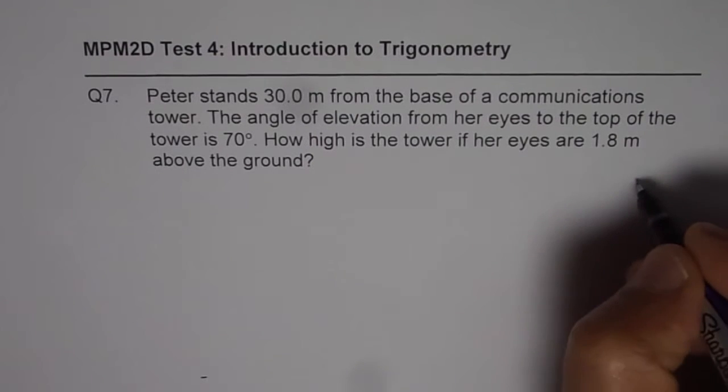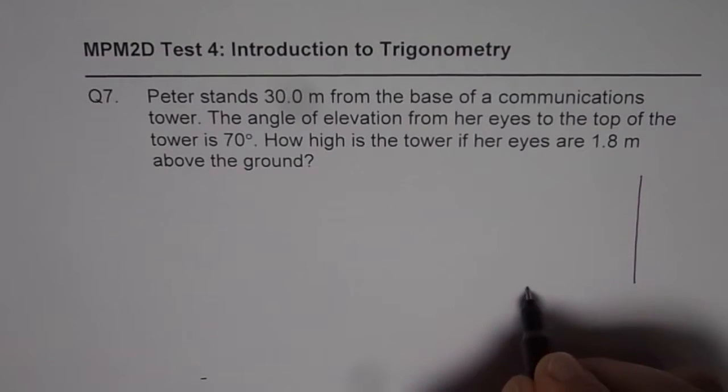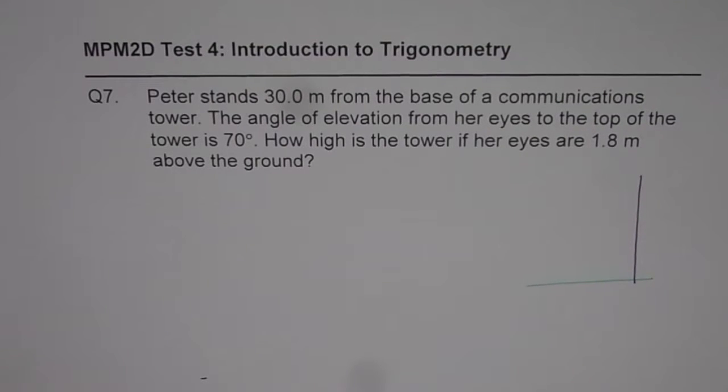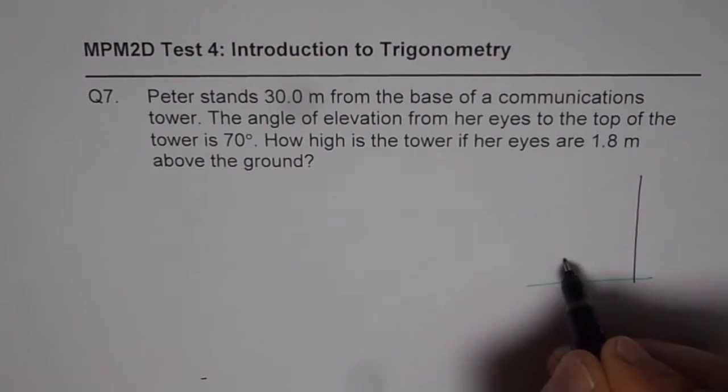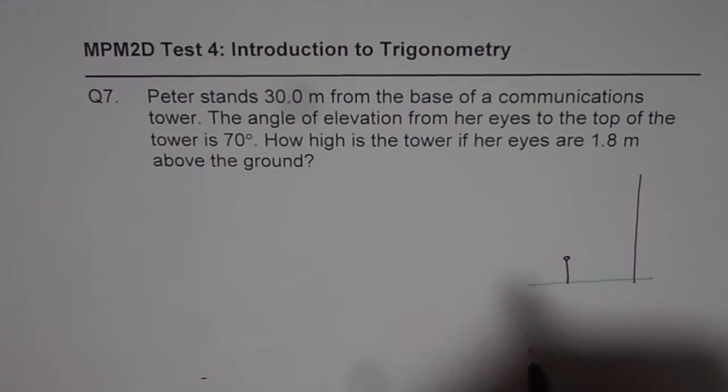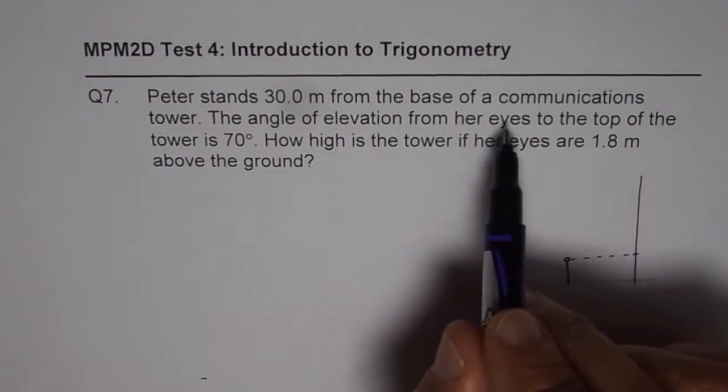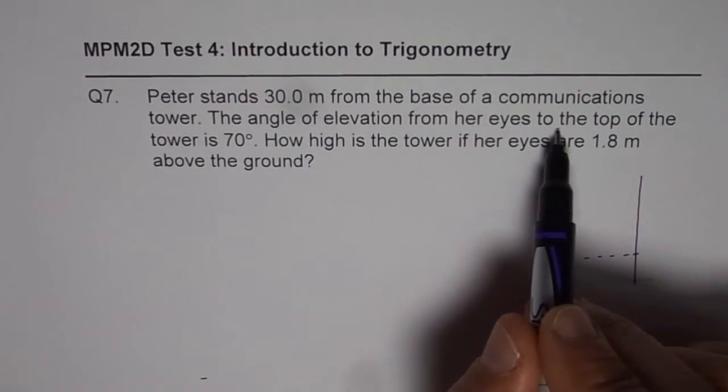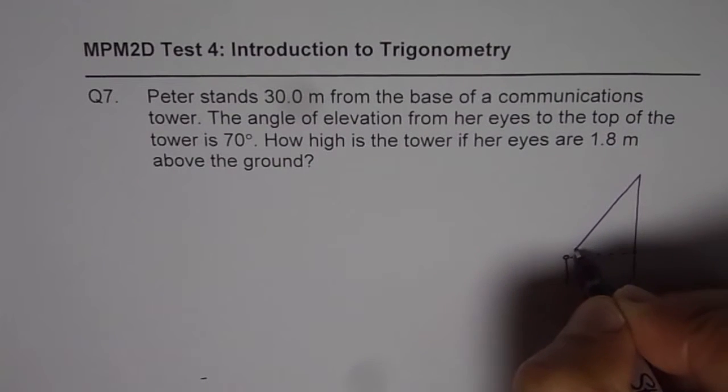So let us say that this is the tower. Now the important thing here is that Peter is standing some 30 meters away from the tower and let us say that is the eye position. Now from the eye, the angle of elevation to the top of the tower is 70 degrees. So let us join there.